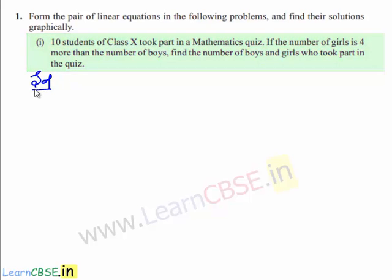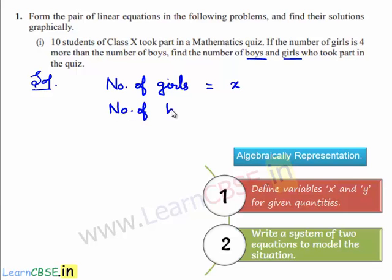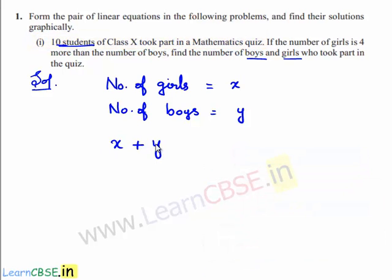Let us see the solution. In this problem, we need to find the number of boys and number of girls. So let us assume number of girls is equal to x and number of boys is equal to y. According to the given problem, there are 10 students in class 10 who took part in the mathematics quiz. When we add the number of girls x and number of boys y, we get the total number of students which is 10. So this gives us the first linear equation: x plus y is equal to 10. This is equation number 1.